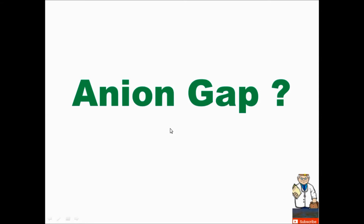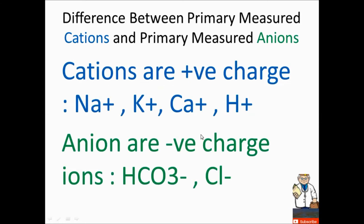First, I'm going to review the definition of anion gap. Anions are negatively charged, and 'gap' refers to whether there is any gap. The definition is the difference between primary measured cations and primary measured anions.